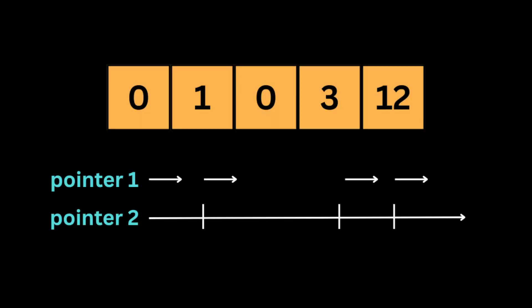The second pointer keeps moving inside the array, searching for integers that are not equal to zero. Once we find one, we swap the integer at the position of the first pointer with the integer at the current position of the second pointer, and then we move the first pointer to the next position.